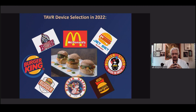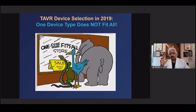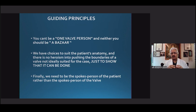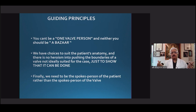Valve selection has become like a bazaar — very difficult to make certain decisions. There are similarities between valves, but within those similarities there are differences, much like the numerous burgers available. Clearly, one device does not fit all. You can't be a one-valve person who pushes the boundaries of a particular valve, as that does not do justice to the patient. The choices we have should suit the patient's anatomy.